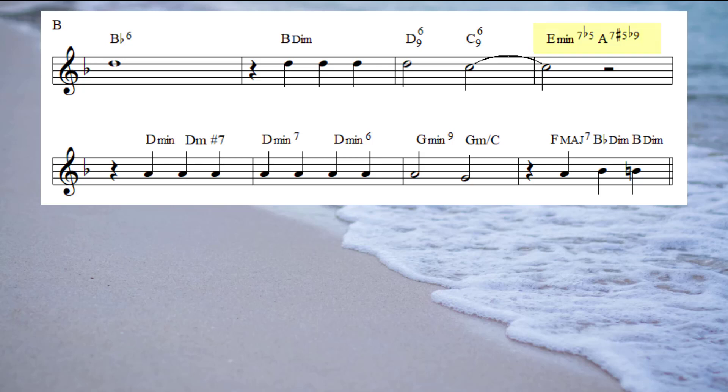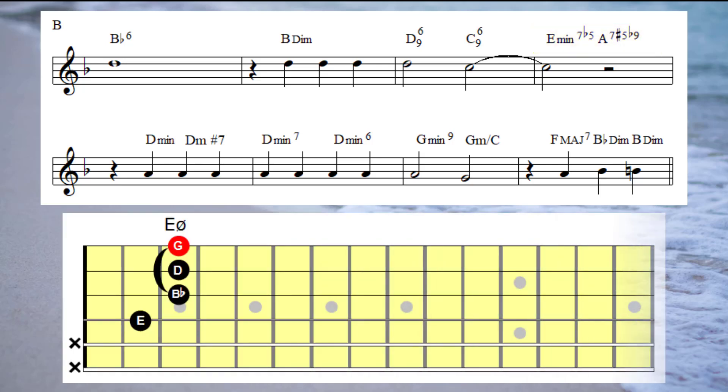And now I'm going to show you a really neat move. If we play an E minor seven flat five as I've got it on the screen at the moment, if we move that E minor seven flat five shape up a minor third, meaning I'm going to move that chord three frets higher in pitch like this...